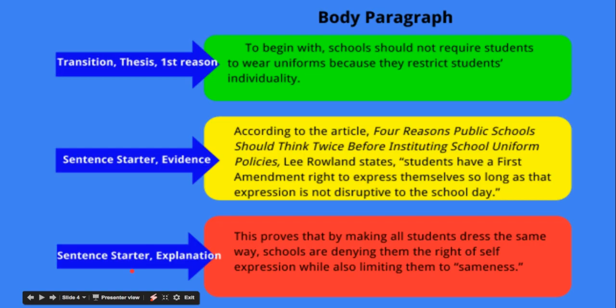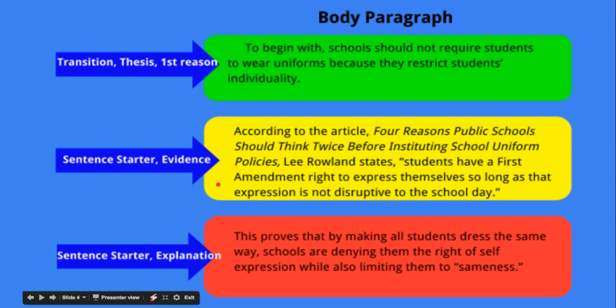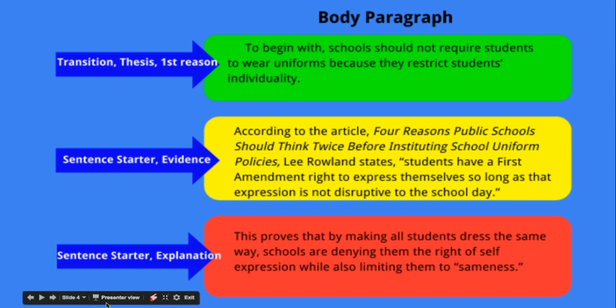Here is my last sentence — it could possibly be two to three sentences, but we're asking that you at least have one. The sentence starter is 'This proves that' or 'This is important because,' followed by your explanation — telling us why this evidence is important to our argument. For example: 'This proves that by making all students dress the same way, schools are denying them the right of self-expression while also limiting them to sameness.' Notice that I did not use any pronouns like you, me, my, or we.